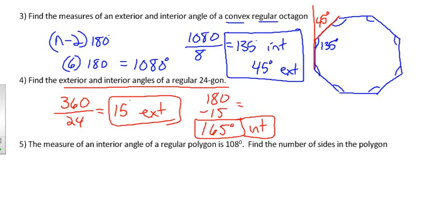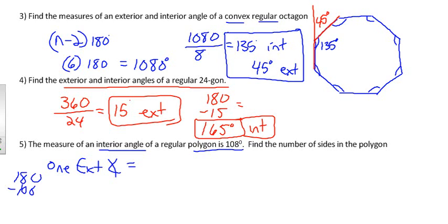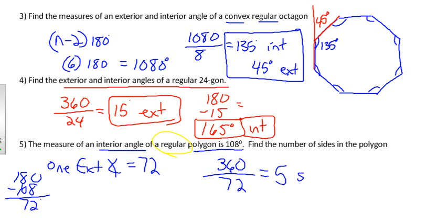Last problem: the measure of each interior angle of a regular polygon is 108 degrees — find the number of sides. The easiest approach uses exterior angles. If the interior angle is 108, the exterior angle is 180 − 108 = 72 degrees. Since all exterior angles add up to 360 and they're all equal because the polygon is regular, 360 ÷ 72 = 5. This polygon must be a pentagon.